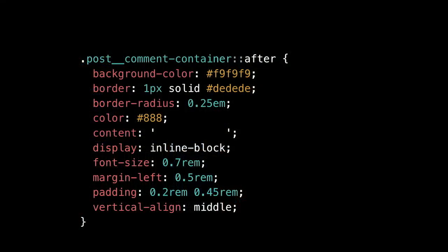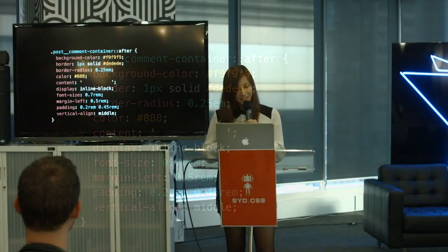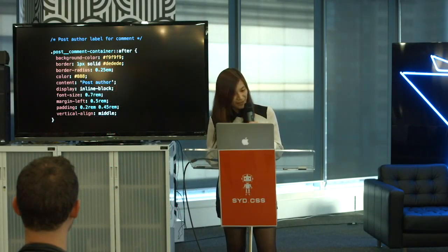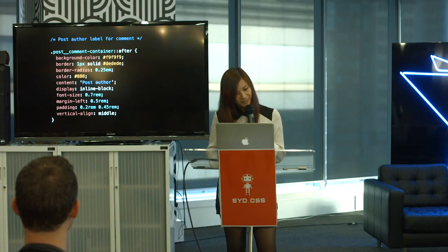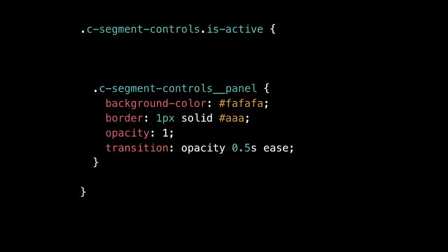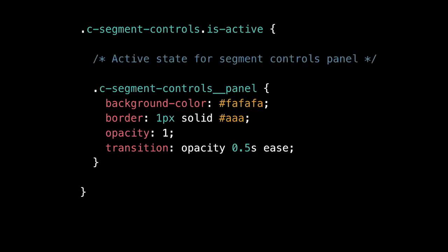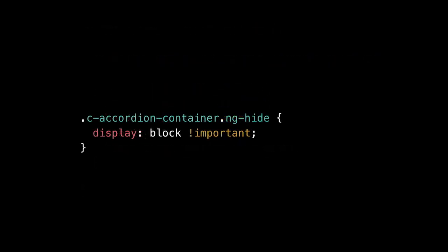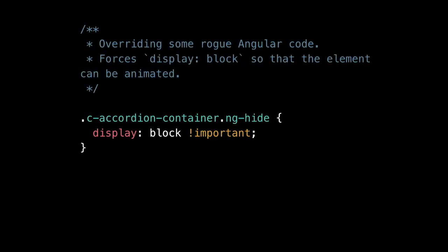Here are a couple of other examples. With this one, we can't name CSS afters, so it might not be immediately obvious what this is — I've also hidden the content. Even though the class name is pretty semantic, just a small comment can really explain what this is, so now we know it's a post author label for a comment. Another example: with a preprocessor it's nested, but what does it do? A few words — 'active state for segment controls panel' — gives us good context. Another one: why would you use !important? Just overriding some Angular stuff so we can animate something. And here's another: why would somebody comment code out and not just remove it entirely? It's just something we can't use just yet.